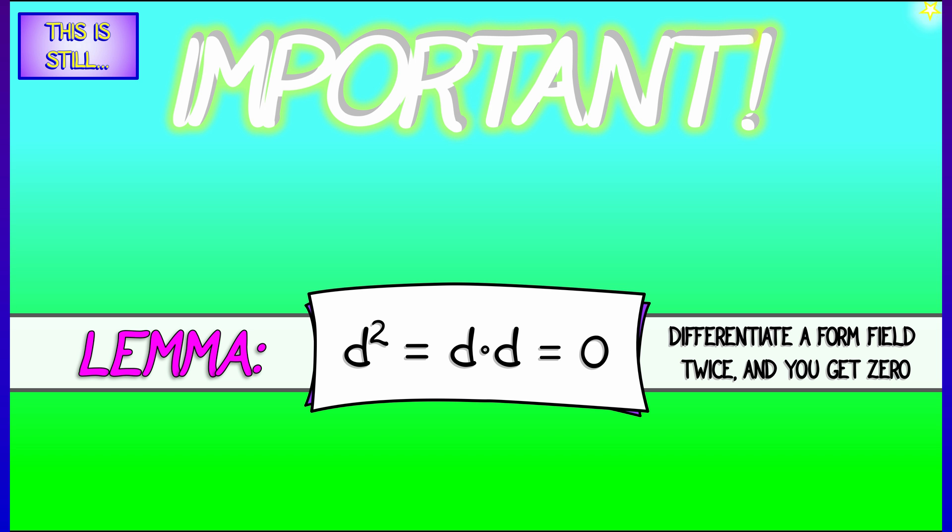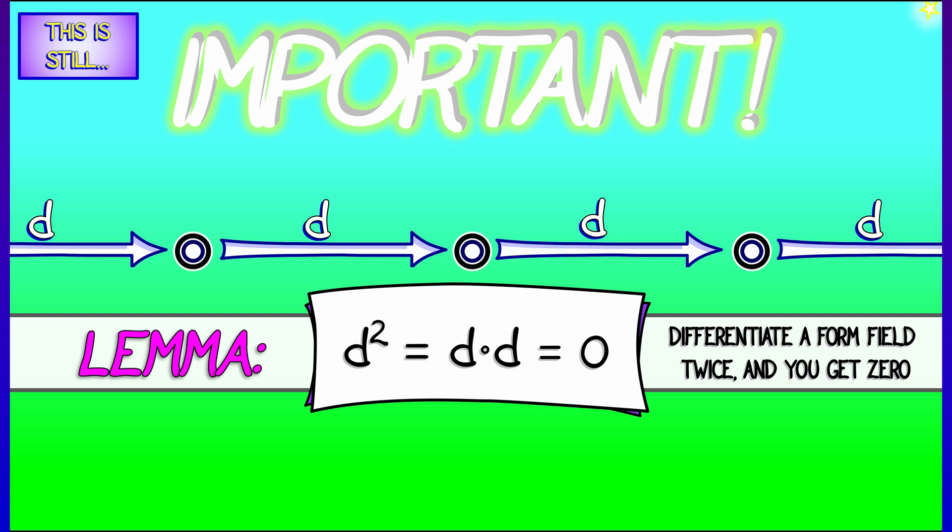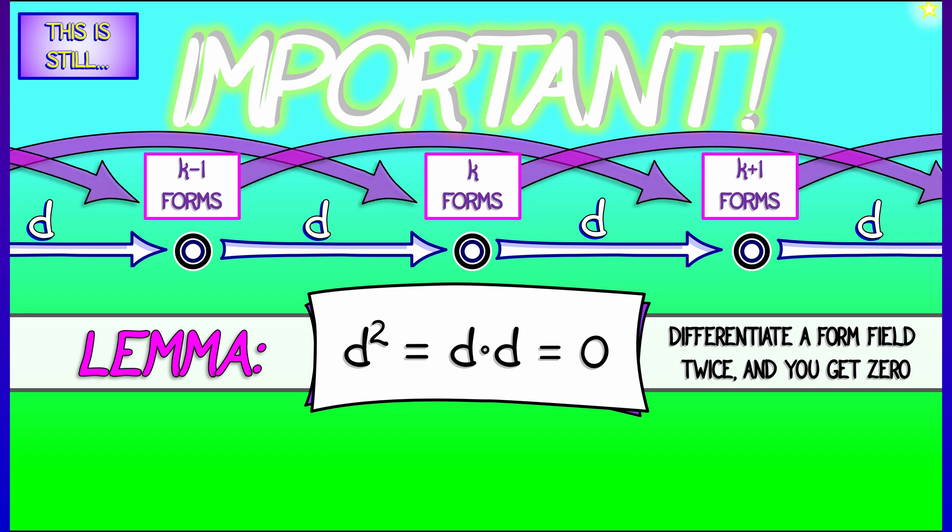If you take a form field, you take its derivative, then you take its derivative again, you get zero. This works not just with one forms and two forms and zero forms, but with all forms.